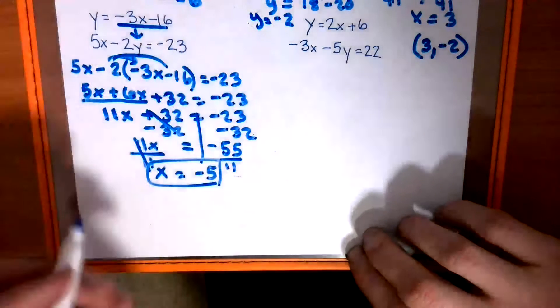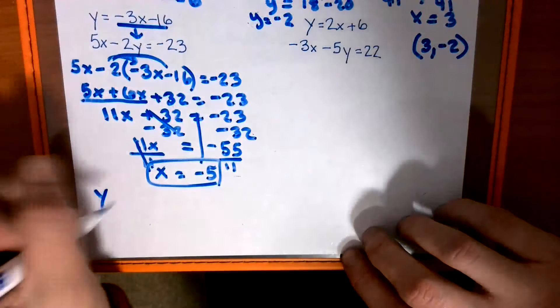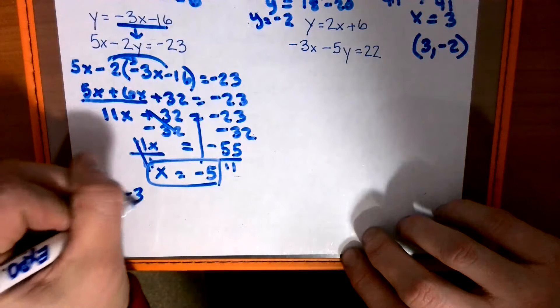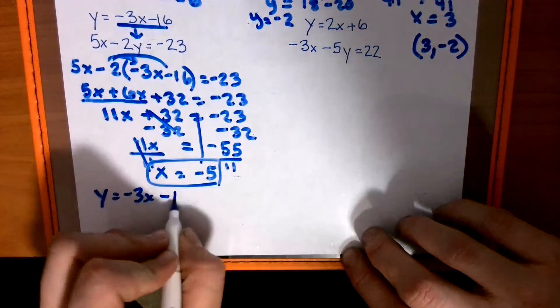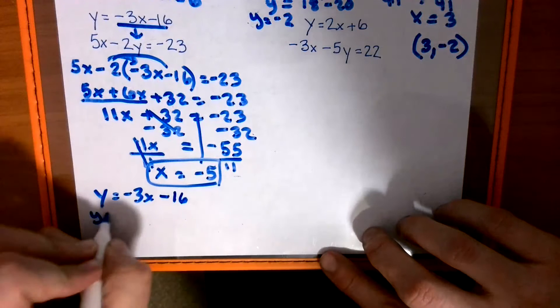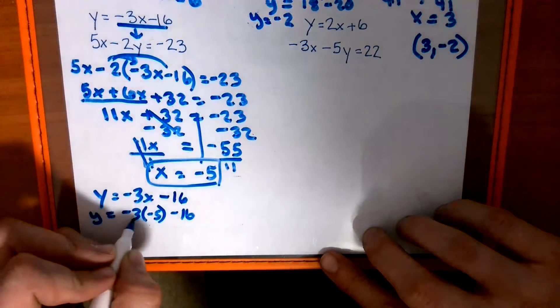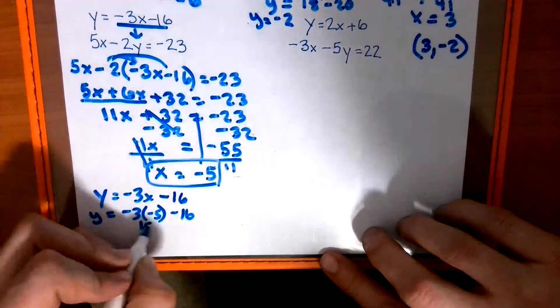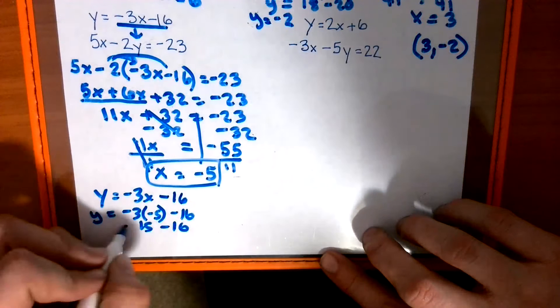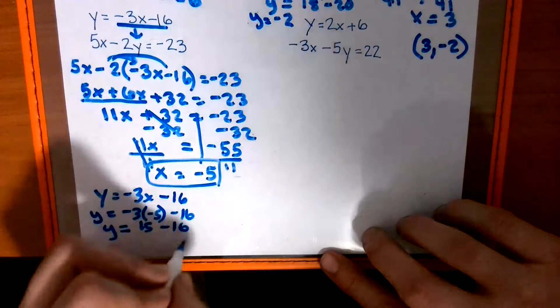And we're going to plug it back in. So I would plug it back into the top one. And in place of my x, I'm putting a negative 5. Negative 3 times negative 5 is positive 15.